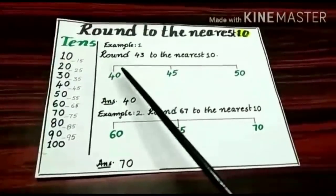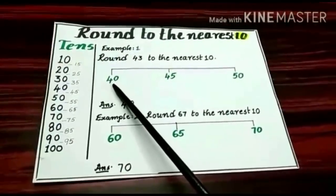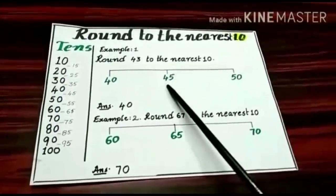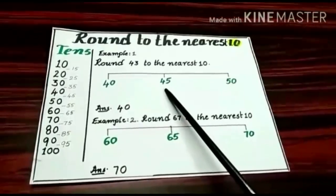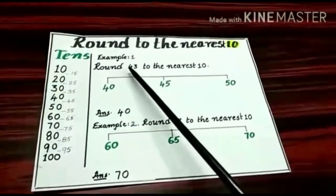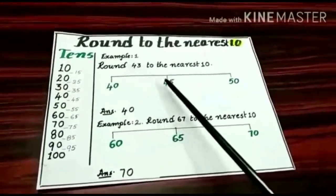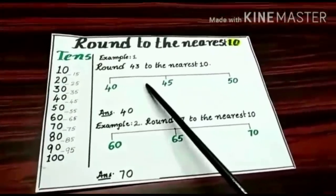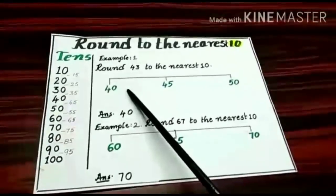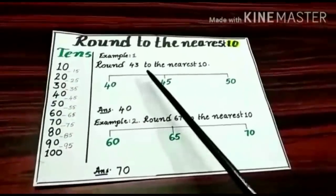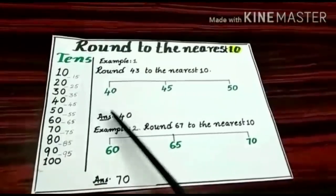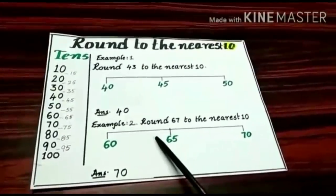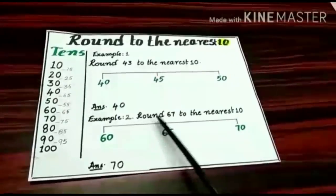43 lies between two 10s: 40 and 50. The middle number is 45. Is 43 more than or less than the middle number? Yes, it is less than the middle number. So round down to the before 10 — that is 40.